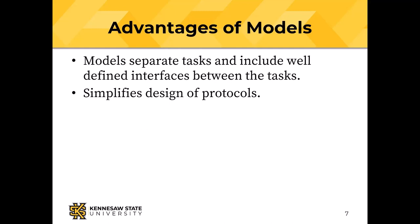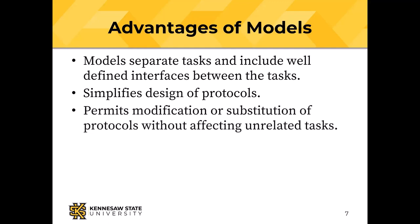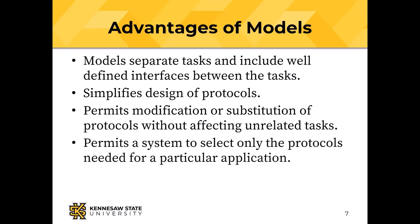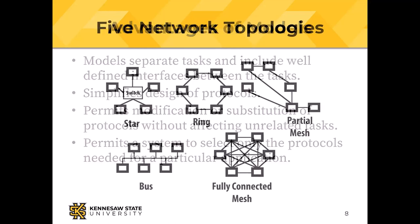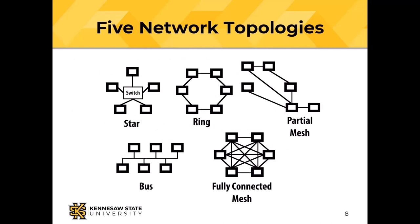Communication models let us separate tasks necessary for communicating, making protocol design simpler. They permit modification or substitution — like switching between wired and wireless Ethernet — and allow a system to select only the protocols it needs. Topologies are the way a network is laid out.